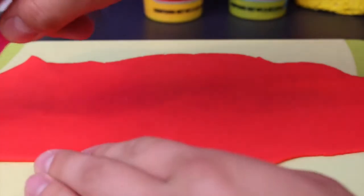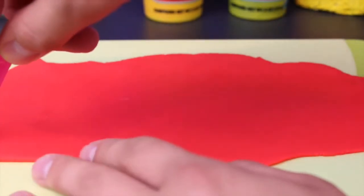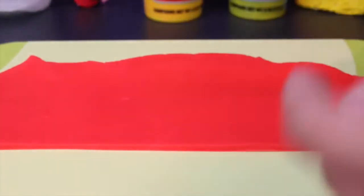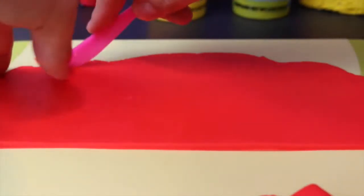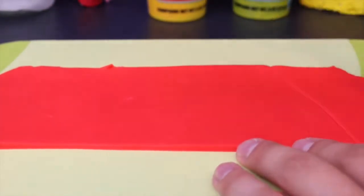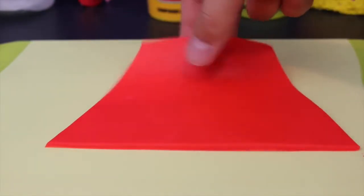Alright we have our nice thin sheet of Play-Doh now I'm gonna take this knife and cut some straight edges to get all those lumpy edges off make it nice straight lines and even and then I'm gonna cut it down the sides as well kind of like the shape of a dress that we'll wrap around and it should look like this.